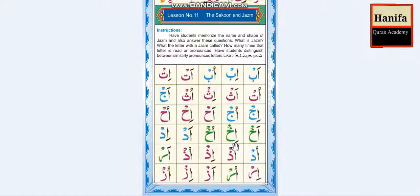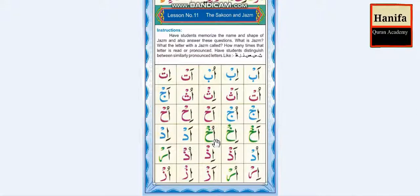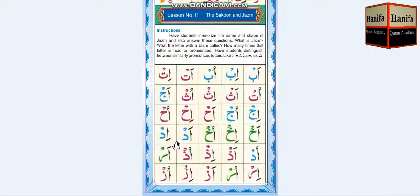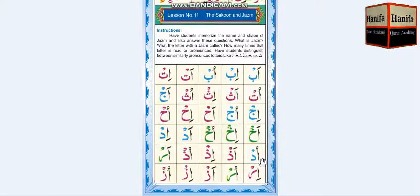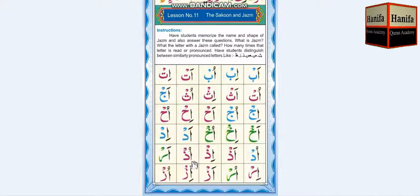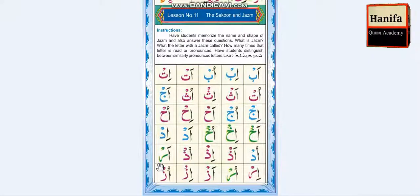Hamza, Khaw, Kasra — Ikh. Hamza, Khaw, Damma — Ukh. Hamza, Dhal, Fathah — Ad. Hamza, Dhal, Kasra — Id. Hamza, Dhal, Damma — Ud. Hamza, Dhal, Fathah — Ad. Hamza, Dhal, Kasra — Id. Hamza, Dhal, Damma — Ud. Hamza, Ra, Fathah — Ar.